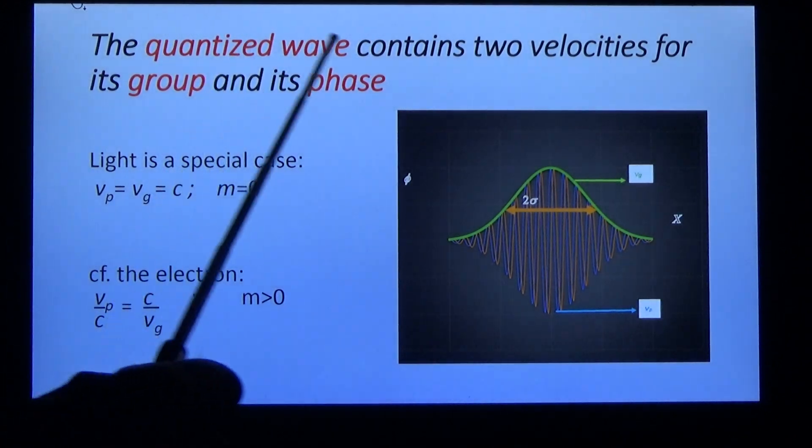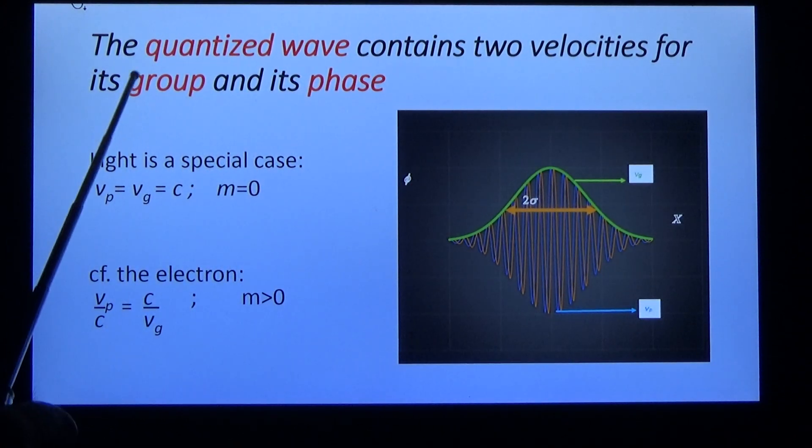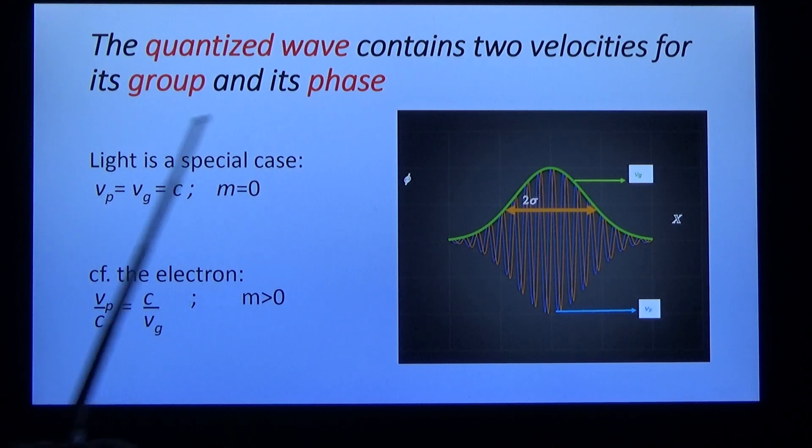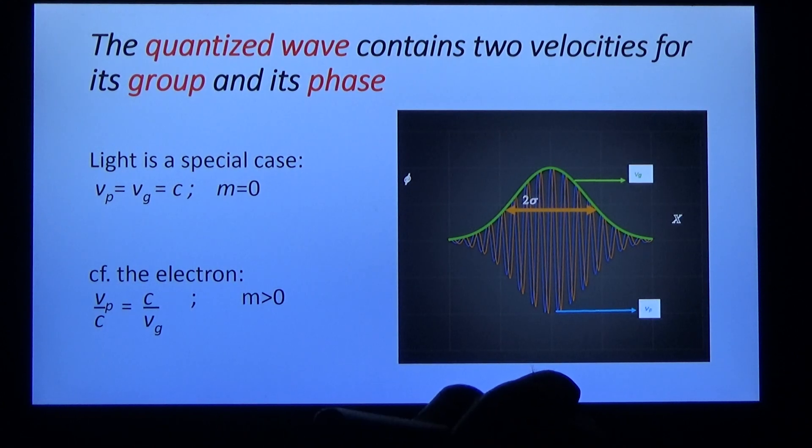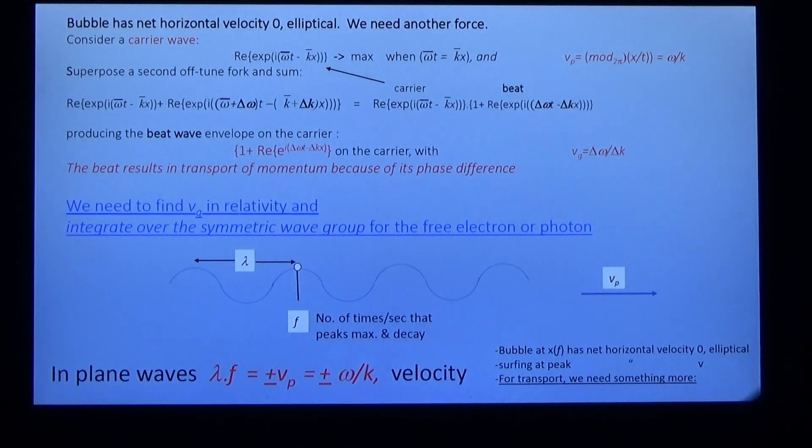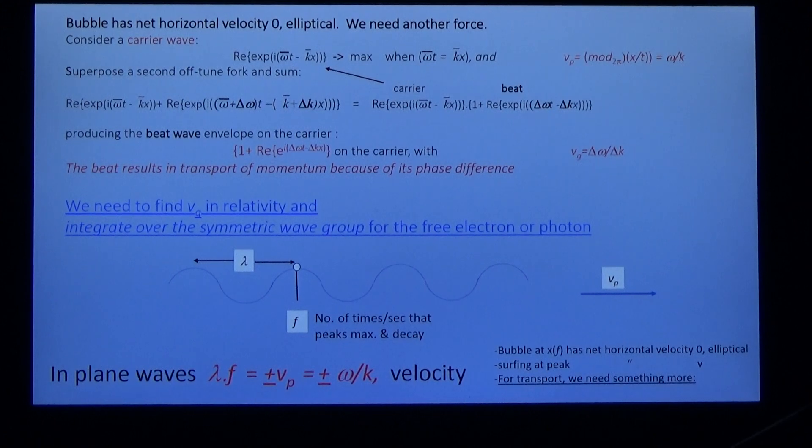The quantized wave contains two velocities for its group and its phase. Light is a special case: the phase velocity and the group velocity are equal to c, both of them. In the electron, the phase velocity is the inverse of the group velocity, and mass is greater than 0. We've got a problem.